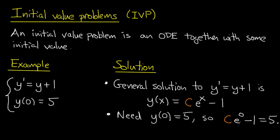That's not too hard. E to the 0 is 1, so we get c minus 1 equals 5, so that means c is 6. So if we go back and we plug in the value of 6 for c, we get the solution to the initial value problem.